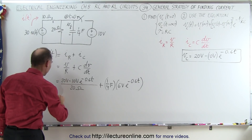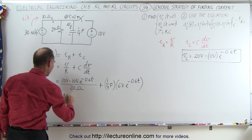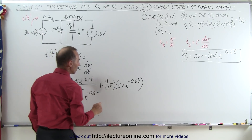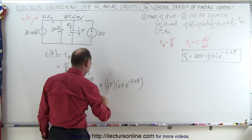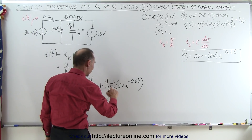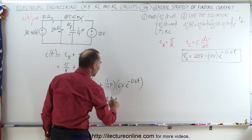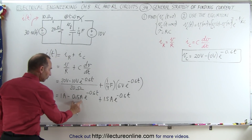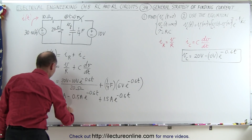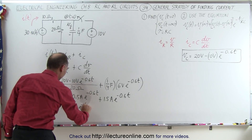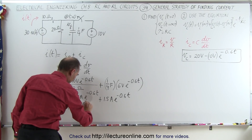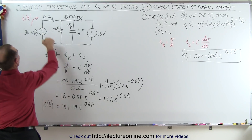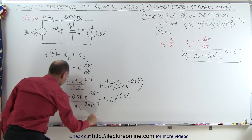Simplifying: the first term gives 1 amp minus 0.5 amps times e to the minus 0.6t. Then one quarter times six gives plus 1.5 amps times e to the minus 0.6t. Combining terms: negative 0.5 plus 1.5 gives 1 amp, so i(t) equals 1 amp plus 1 amp times e to the minus 0.6t. That is the current leaving the voltage source as a function of time.